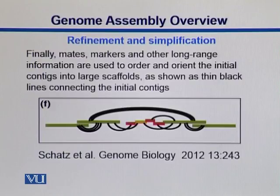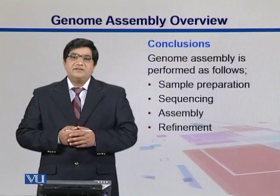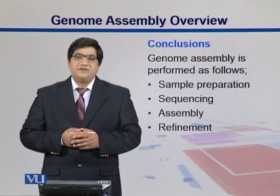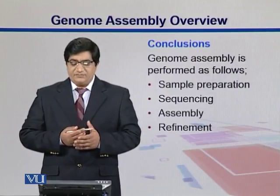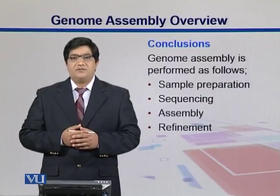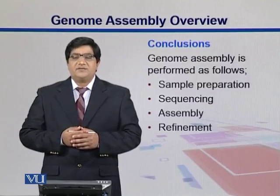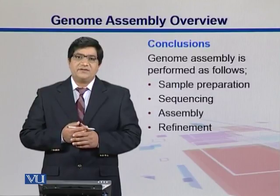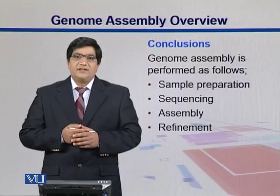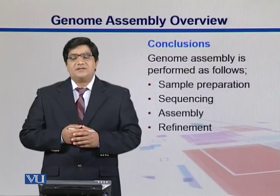Finally, we get back to an assembled genome. What we have seen here is that the genome assembly process is divided into the following phases: we do sample prep, we do sequencing which is done by next generation sequencers, then we do assembly, and these assemblies are finally refined.